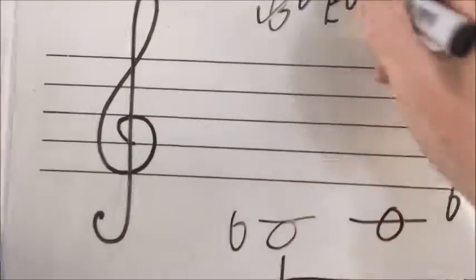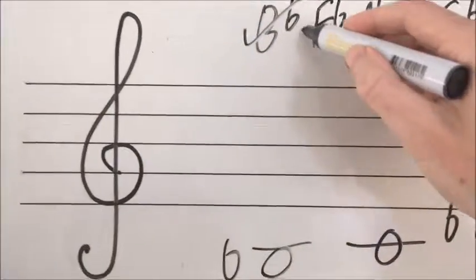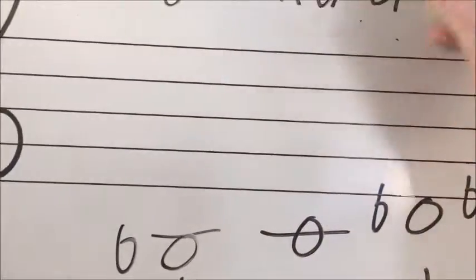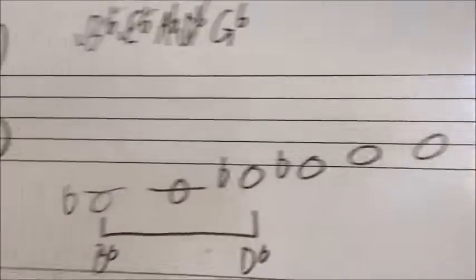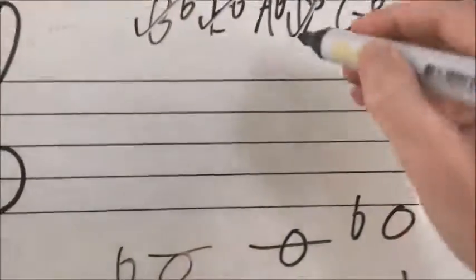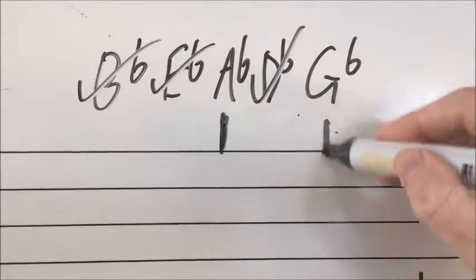We've got our B flat, so let's give that a tick. We've got our E flat, let's give it a tick. We've got our D flat, let's give it a tick. And the B flat at the top as well. What we don't have is an A flat or a G flat.